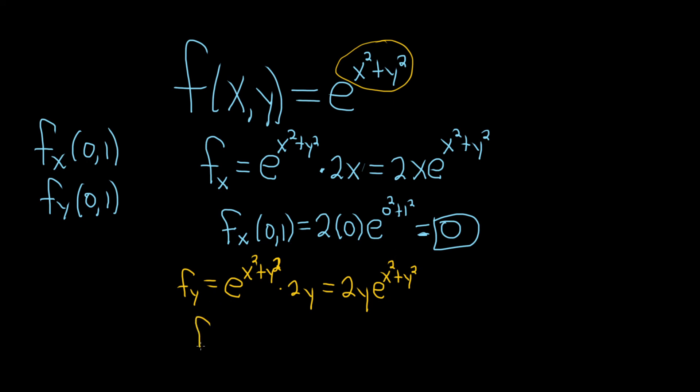And so now we'll just plug in our point. So f sub y at (0,1). So let's see what happens here. It's 2 times 1, right, because y is 1, e to the 0 squared plus 1 squared. That would just be 2e. So that would be the answer there. I hope this video has been helpful. Good luck.